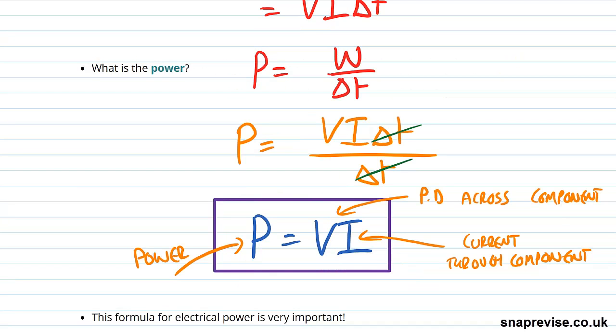So the power is the potential difference across a component, the amount of energy transferred per second to a component, which is the potential difference across the component times the current through the component. This formula for electrical power is very important, and we're going to return to it quite a bit.